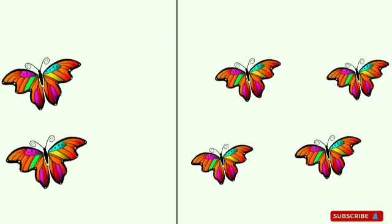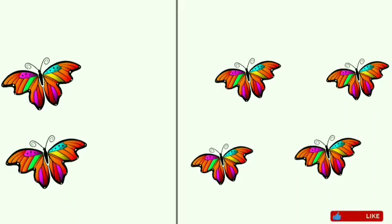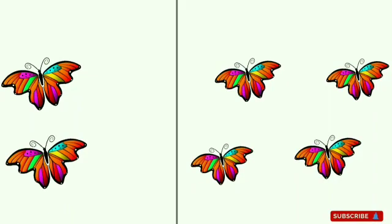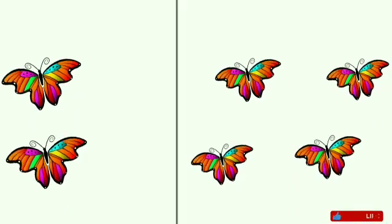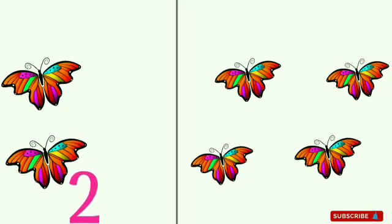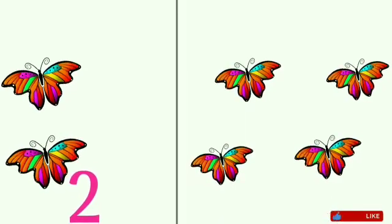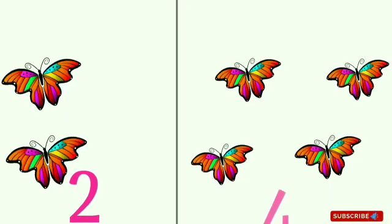Children, what are these? Yes, these are butterflies. Here we have two groups of butterflies. The first group has one, two — two butterflies. And the second group has one, two, three, four — four butterflies.